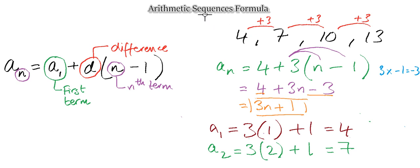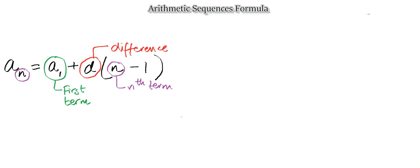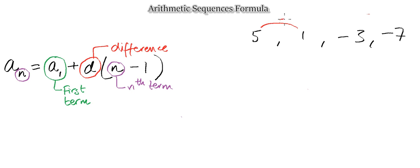The previous sequence was increasing. Now let's look at a decreasing sequence. Consider the sequence: five, one, minus three, and minus seven. From five to one we decrease by four; from one to minus three, decrease by four; and again decreasing by four. Using the exact same approach as the previous example, let's form an expression.